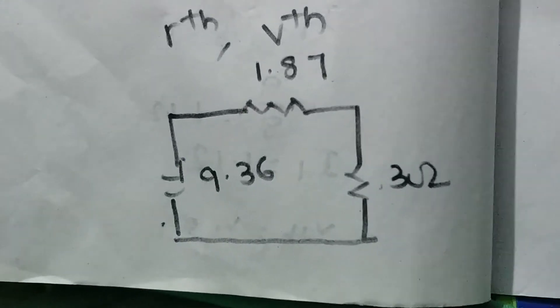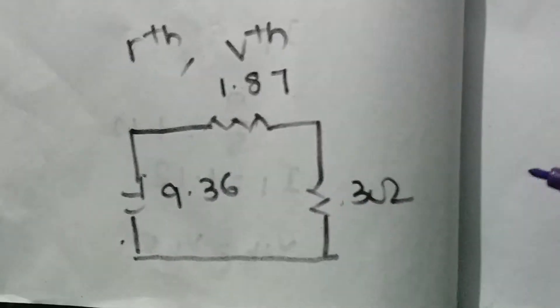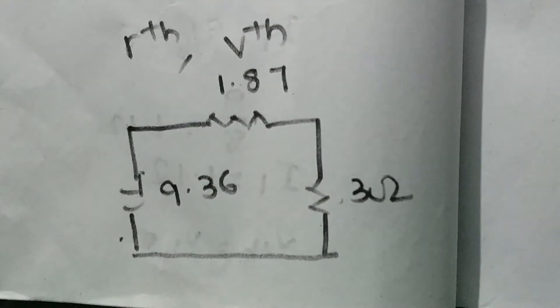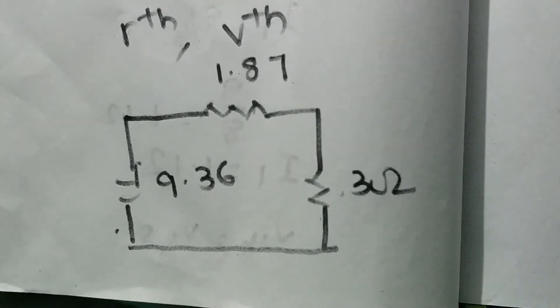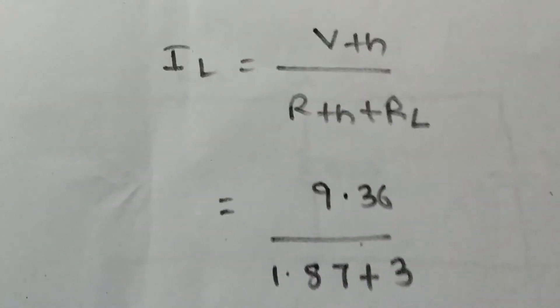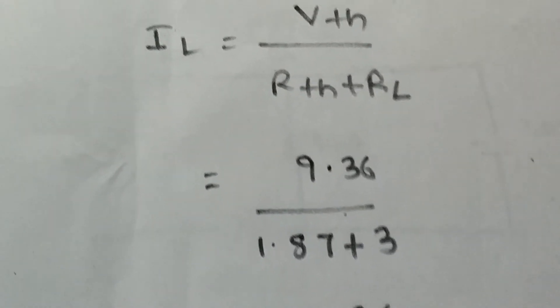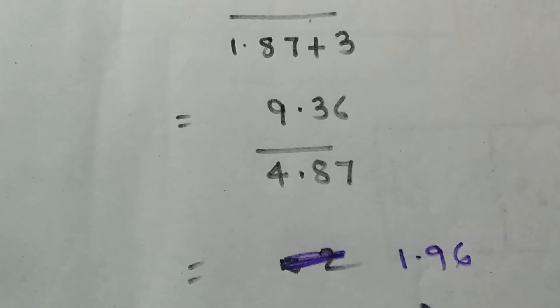So in our circuit, the Rth value is 1.87 ohms, the Vth value is 9.36 volts, and RL is 3 ohms. Applying Ohm's law, we find IL using the formula: IL equals Vth divided by (Rth plus RL). So that is 9.36 divided by (1.87 plus 3), which equals 9.36 divided by 4.87, giving approximately 1.96 amperes.